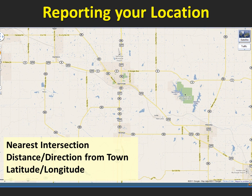Reports without good location information are not very helpful, and in some cases can create confusion that can make things even worse than having no information at all. We have to be able to find your location on a map based on your verbal description of where you are, so it's really important that you tell us where you are in clear, concise terms. It's usually best to reference streets, roads, or landmarks that are well known in your local community, but that are also easy for us to find on a map.